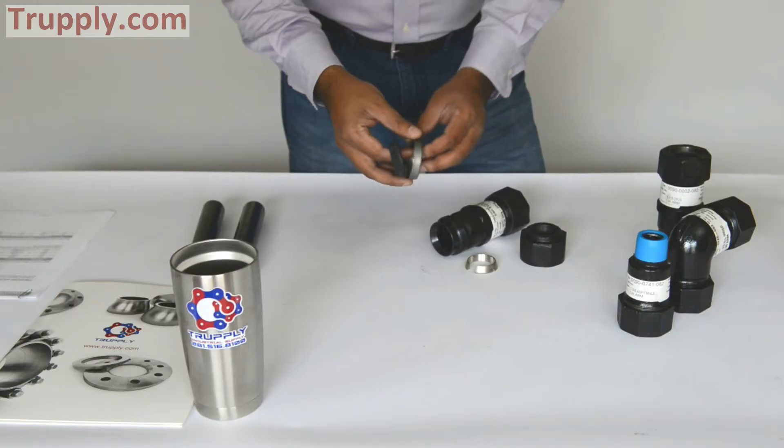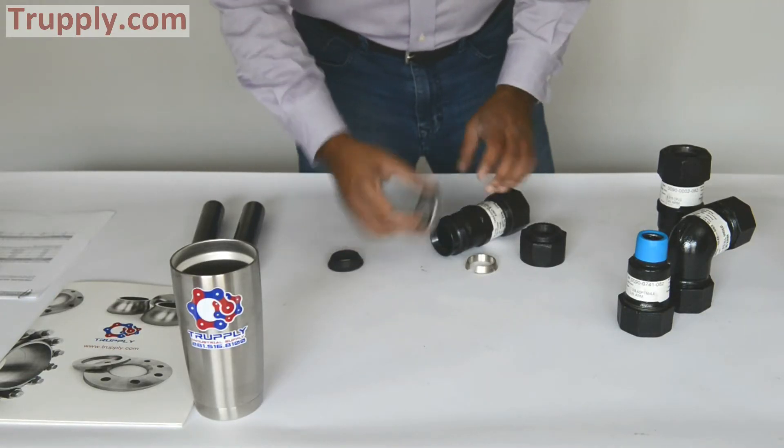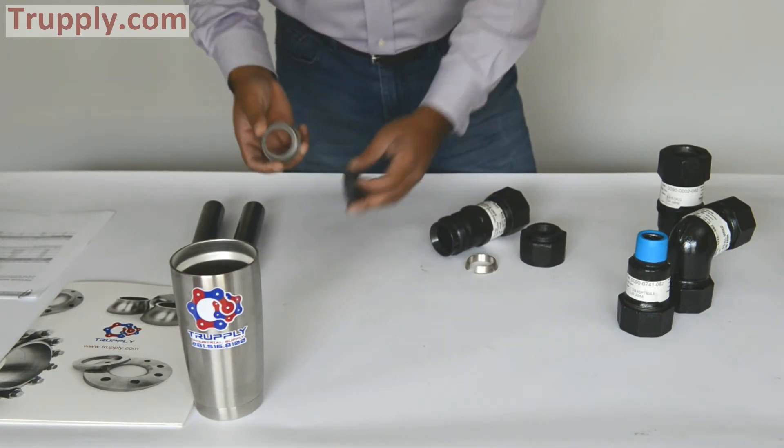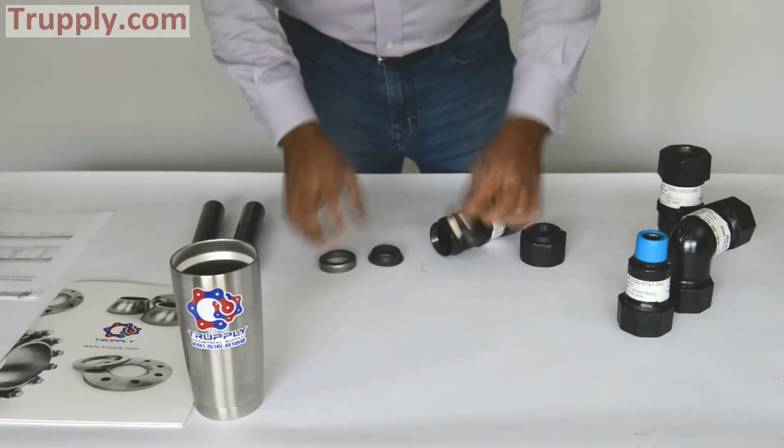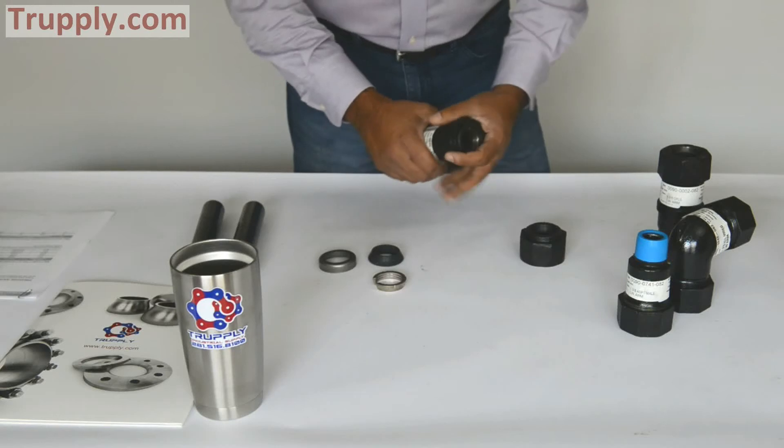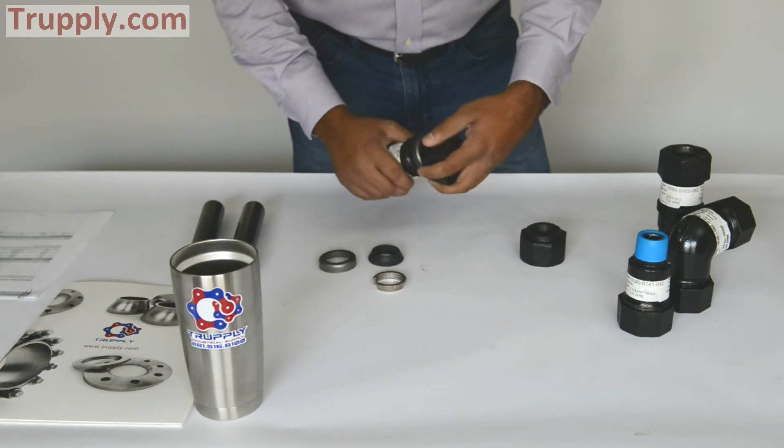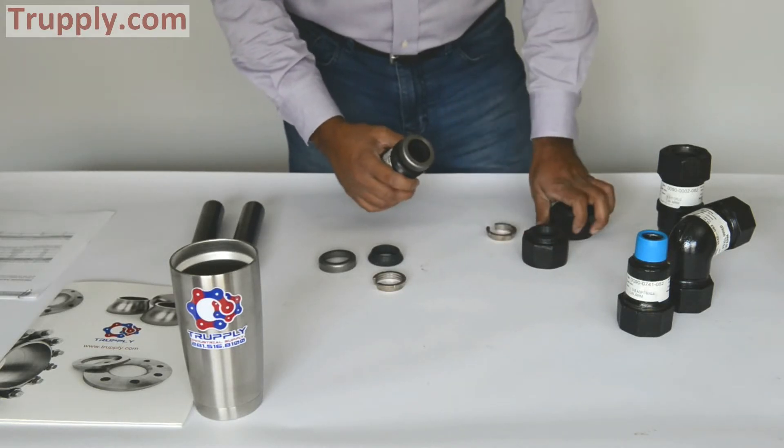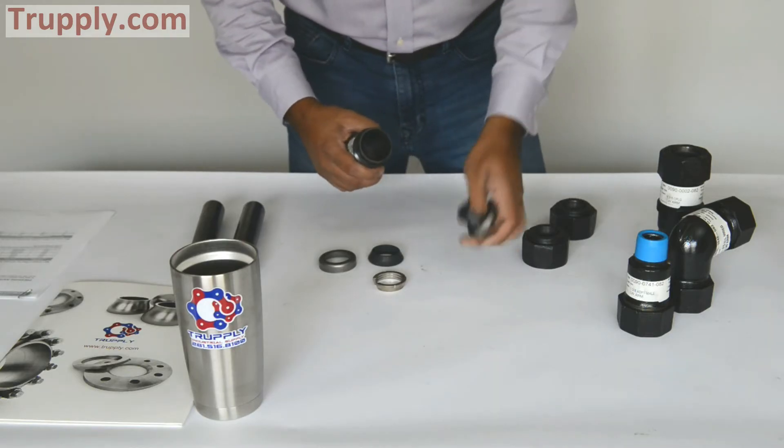So these are the components of a Style 90 universal coupling. Retainer cup, gasket, lock ring, and same thing on the other side.